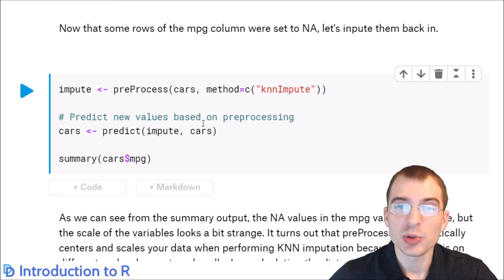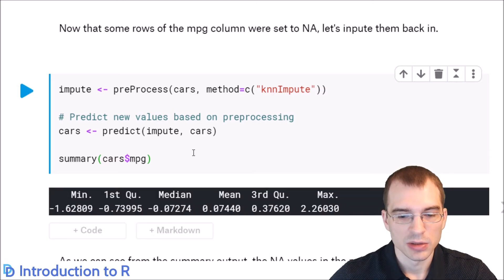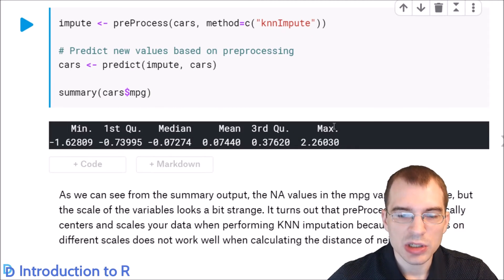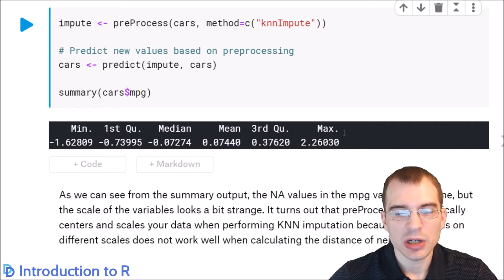After you've run that imputation, you then need to use this predict function to apply the imputed values to the data set. We're predicting new values based on the preprocessing that we ran. Then we're just resaving it as cars. Let's run this and see what the summary of the MPG column says. As you can see, the NA values from the MPG column have been removed.